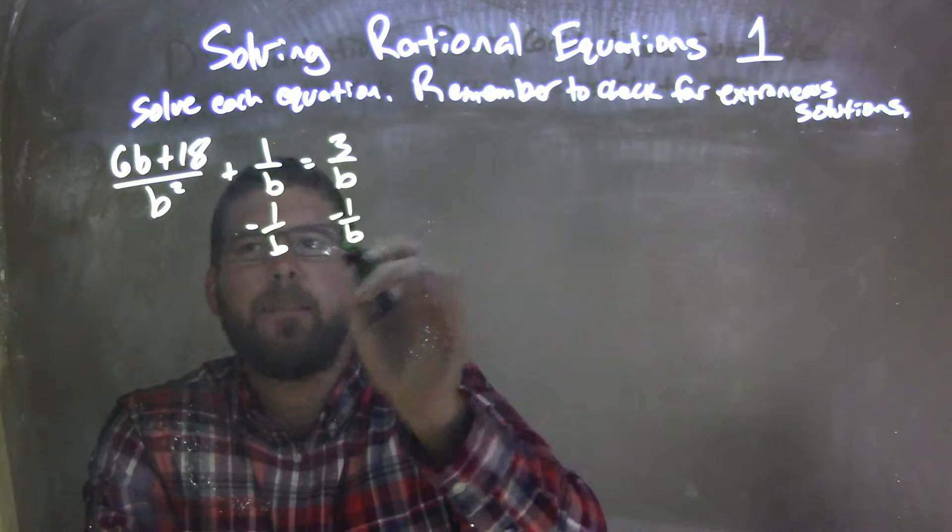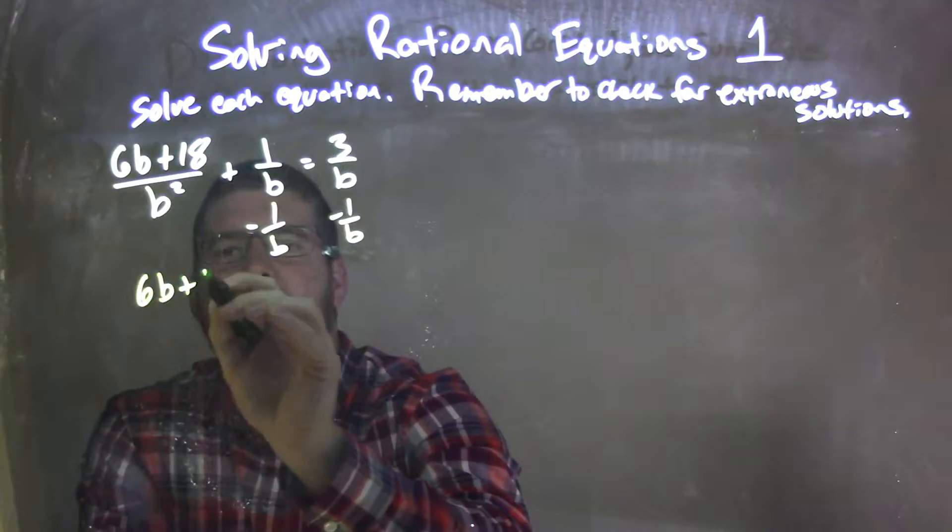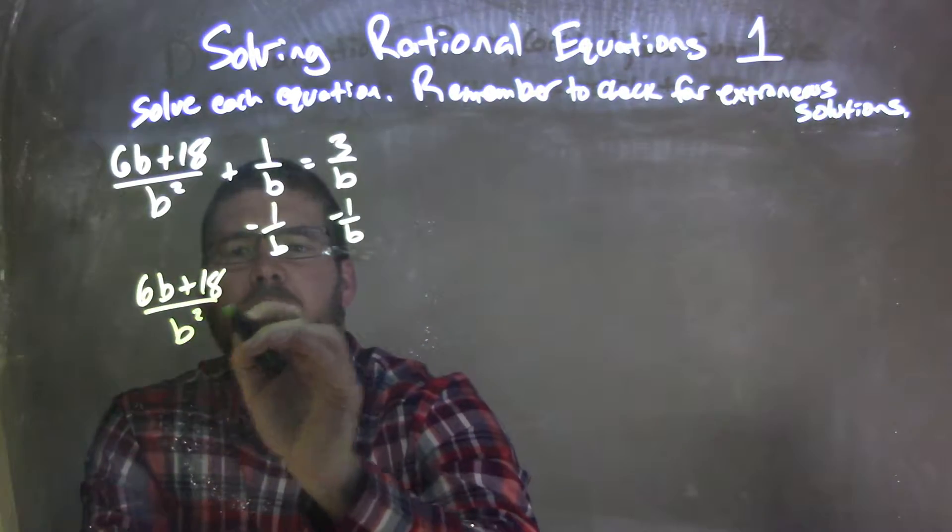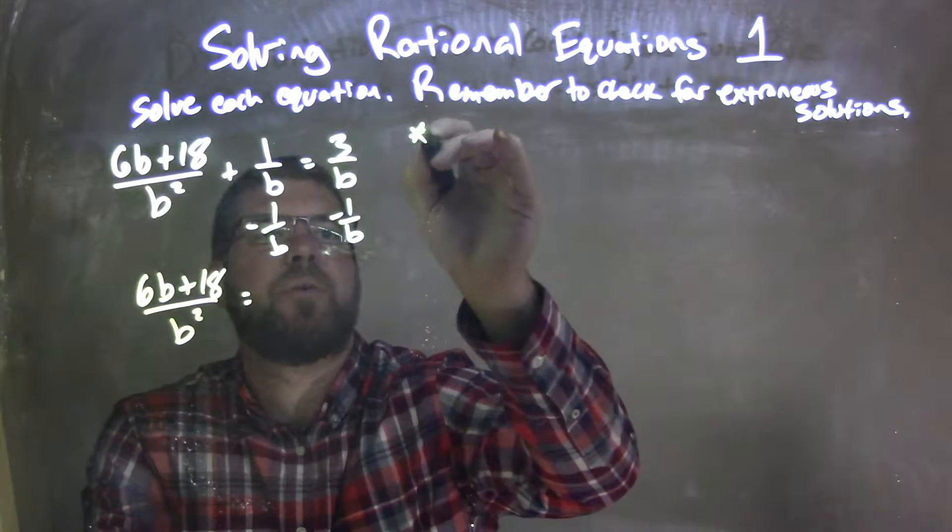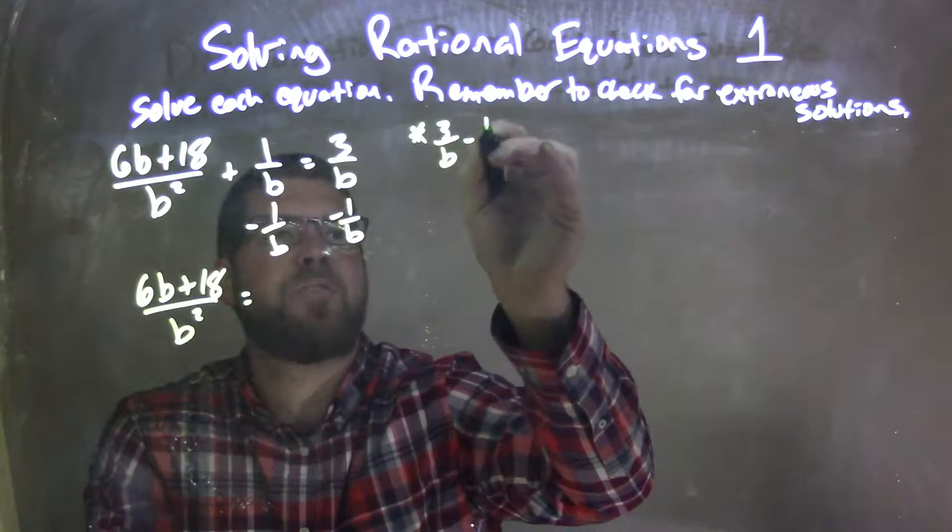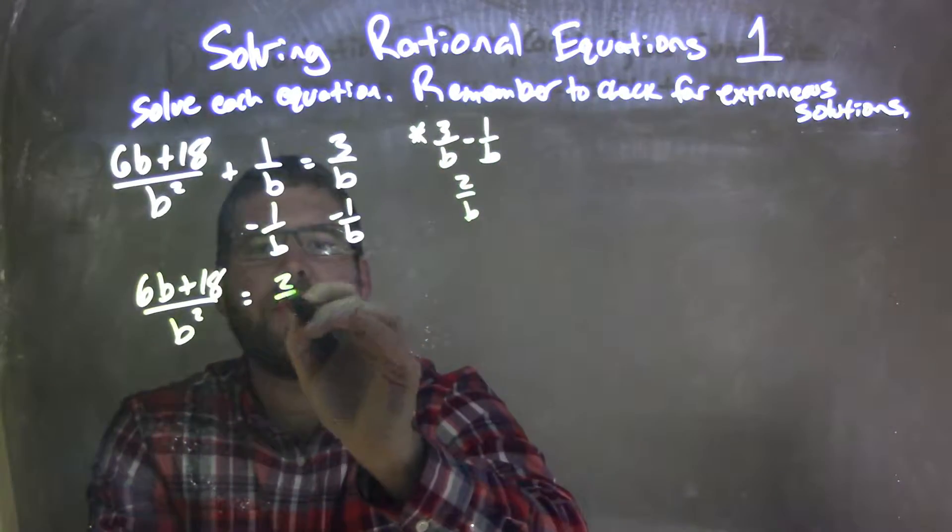What that does, we have the same base over there, so we can combine those two. So I have 6b plus 18 over b squared on the left equals 3b minus, we can see a little note here, 3b minus 1 over b is just 2 over b. So we have 2 over b right there.